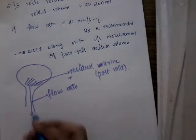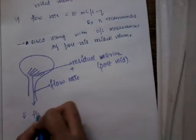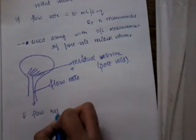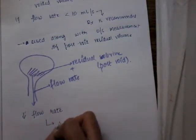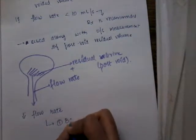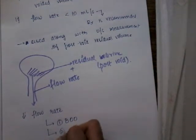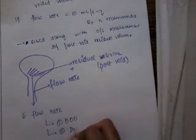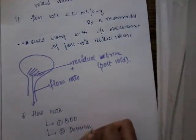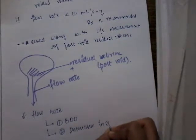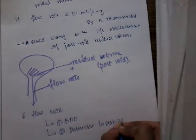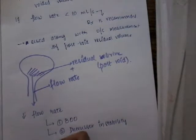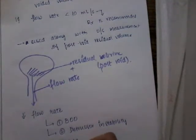If there is decreased flow rate, what does that show? Number one: bladder outflow obstruction. Number two: detrusor instability. Even in detrusor instability there is decreased flow rate. Number three: weak bladder contractions.